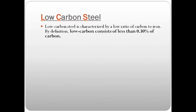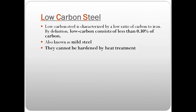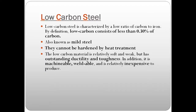Low carbon steels, as already mentioned, have a percentage of carbon less than 0.3%. Fun fact: this is more popularly known as mild steel. Since the percentage of carbon is very low, these cannot be hardened by heat treatment. For hardening these steels, we either go for cold working or case hardening. Since the percentage of carbon is very low, these steels have outstanding ductility and toughness. They are also highly machinable, weldable, and relatively inexpensive.